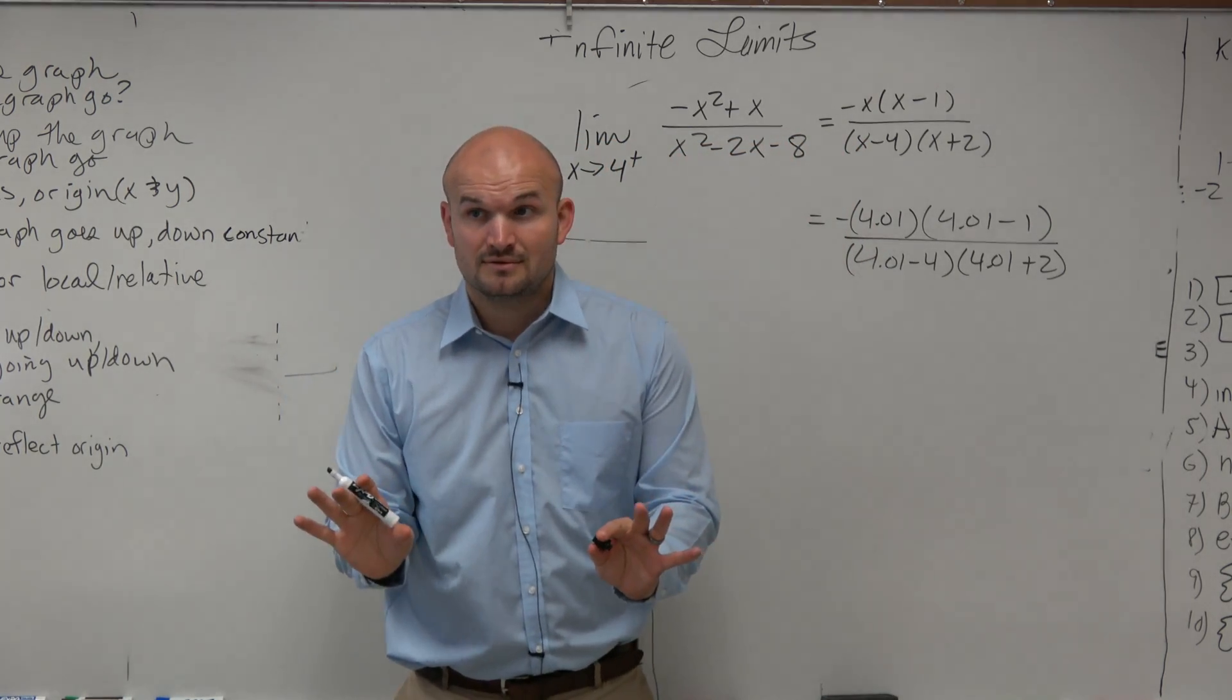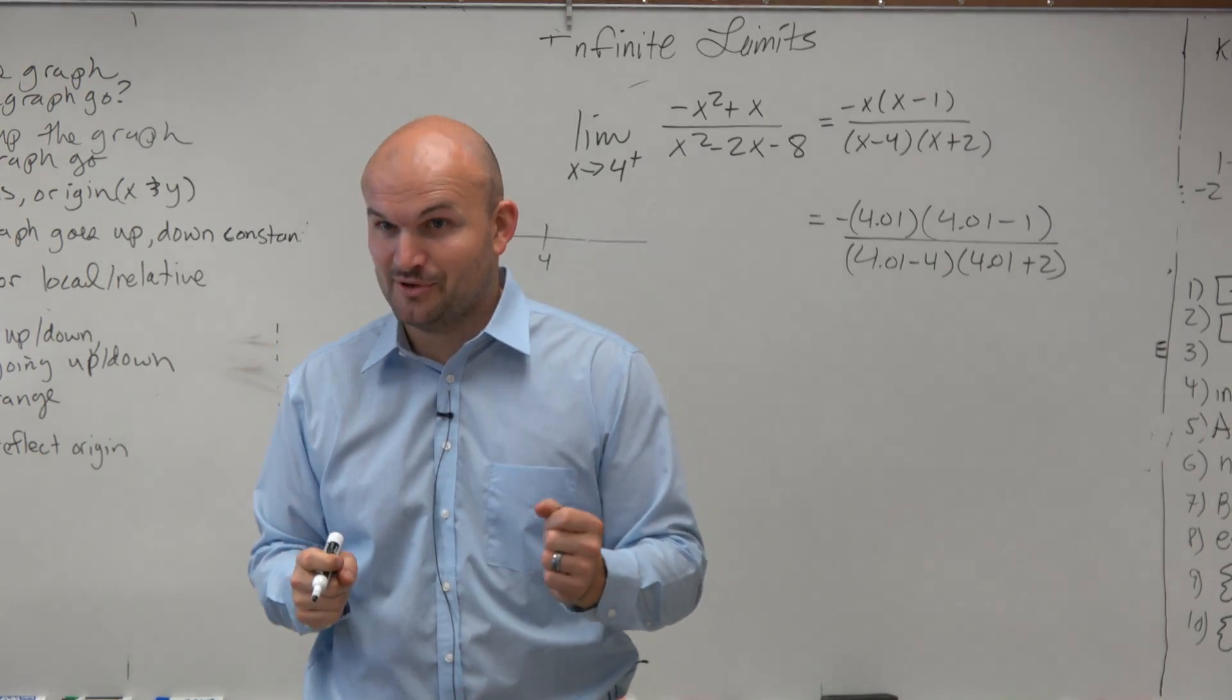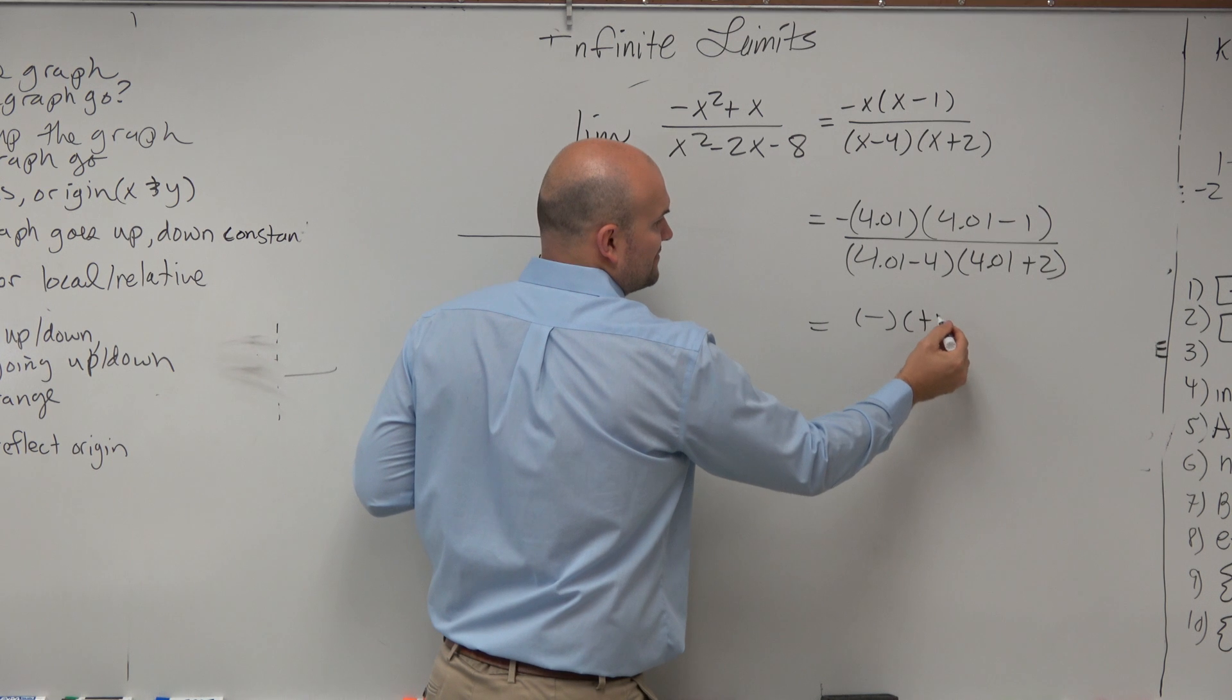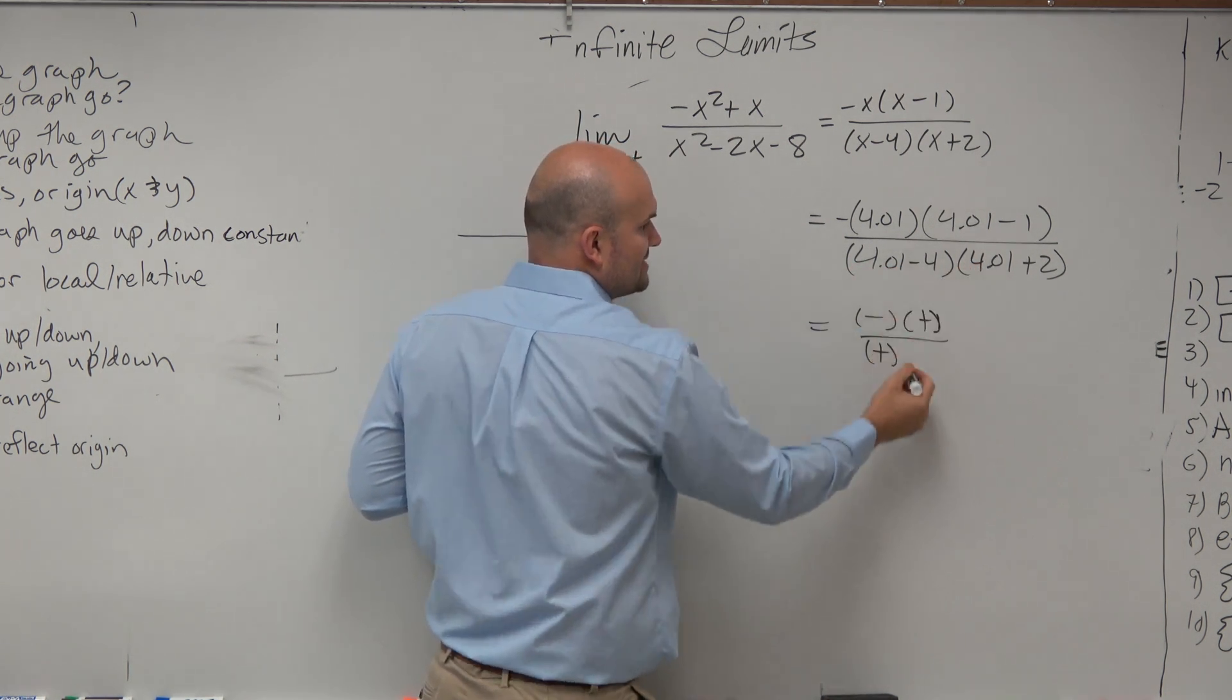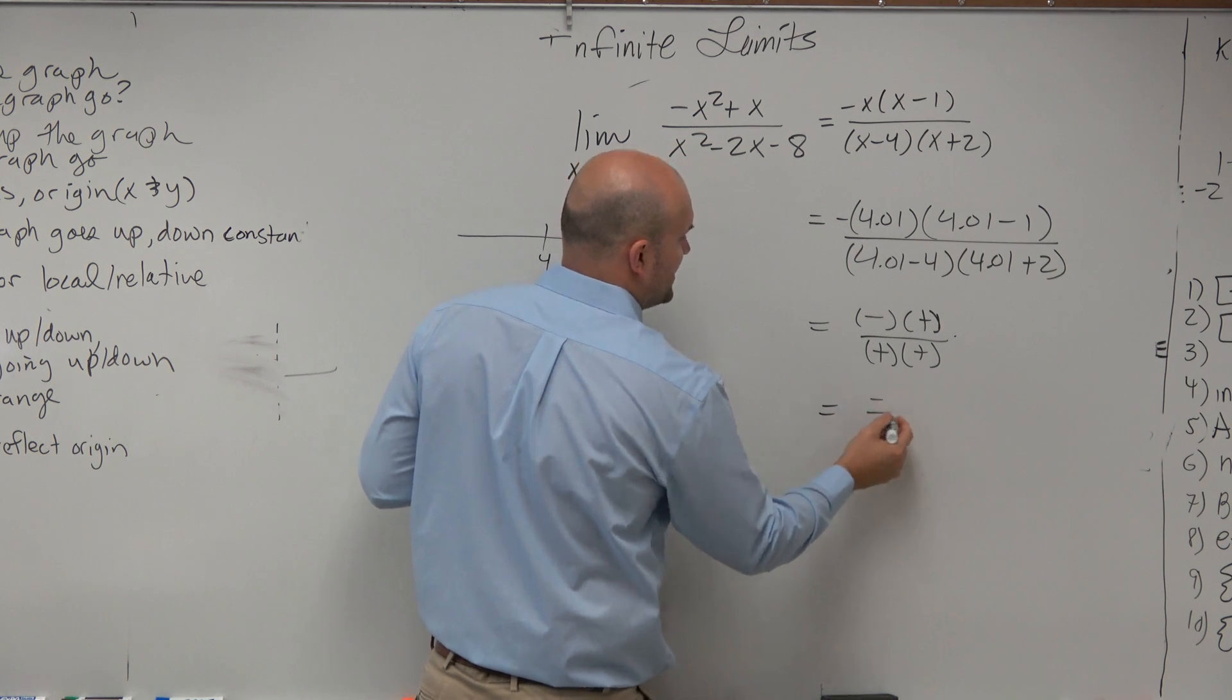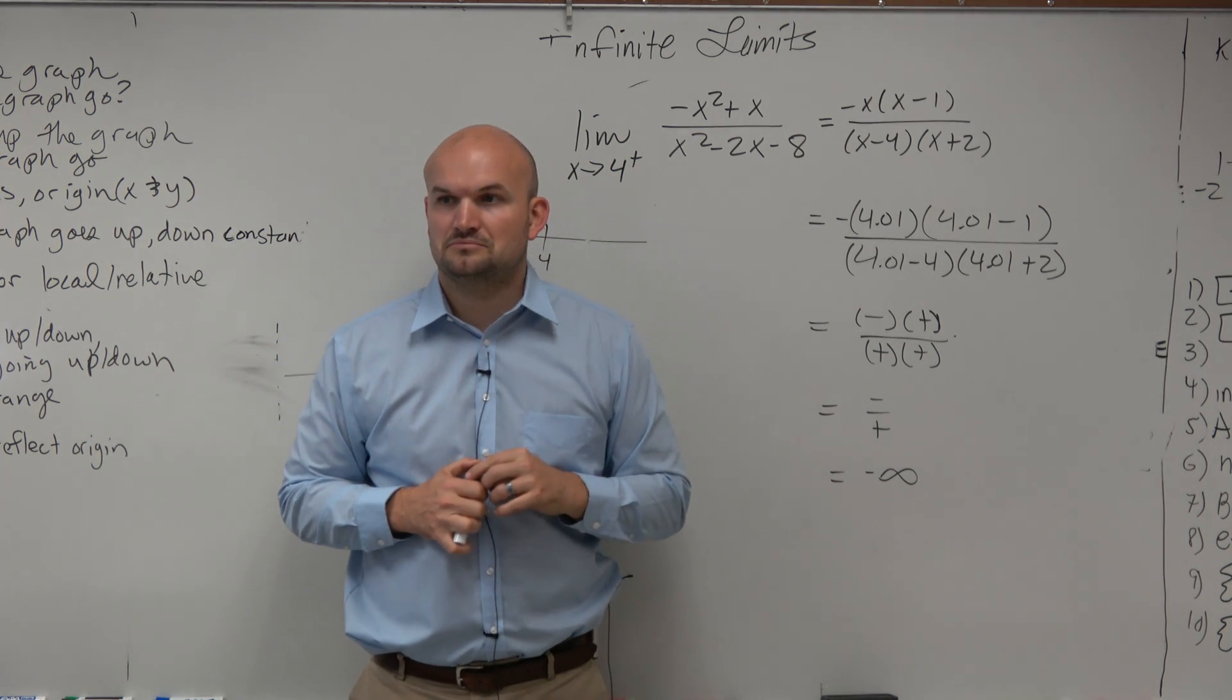Okay, now again, we don't need to play mathematician here. We just need to play positive-negative person. That's all we're doing. So negative, that goes to a negative. This is going to be a positive. Denominator, that is a positive. That is a positive. But negative times positive is negative over positive. Negative over positive is negative infinity. Okay?